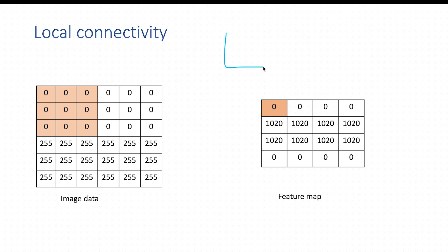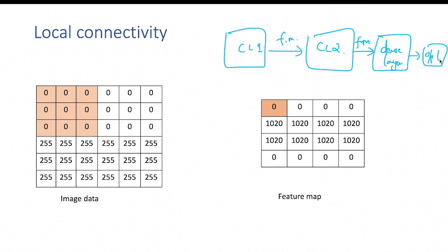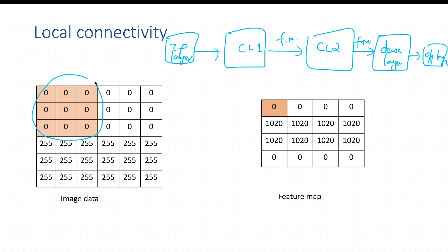Whatever feature maps you produce within your convolution layer can also act as input to a subsequent convolution layer, where you try to extract more complex features. The level of abstraction generally increases as we stack more and more convolution layers. The output feature maps from convolution layer 2 will be fed as input to a dense layer or hidden layer, and the output of the dense layer can again be fed into the output layer. The input layer holds the input image data. Local connectivity explains how closely the pixels within a localized region are related — whether we are identifying edges, patterns, or textures.